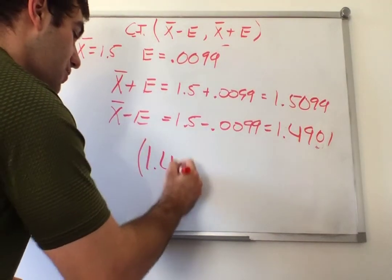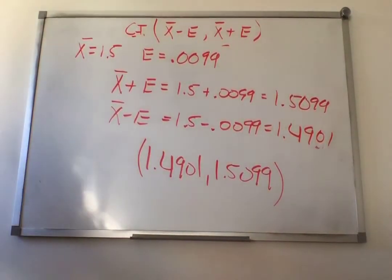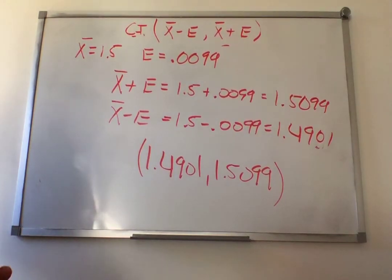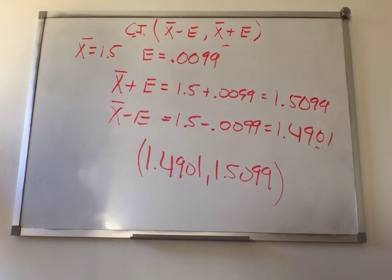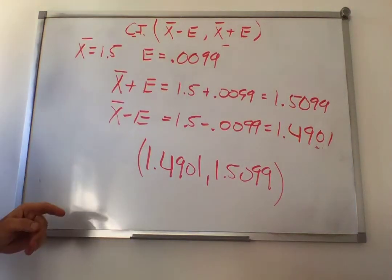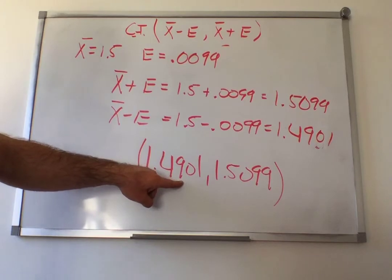With our error of 0.099 and x-bar of 1.5, the upper bound is 1.5 plus 0.099 equals 1.599, and the lower bound is 1.5 minus 0.099 equals 1.401. That's our confidence interval. To interpret: we are 90% confident that the true average wait time in the emergency room is between 1.401 hours and 1.599 hours.